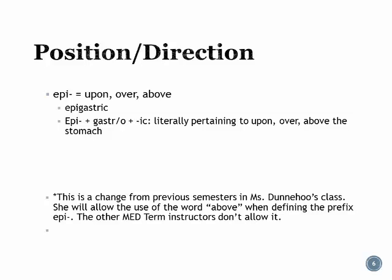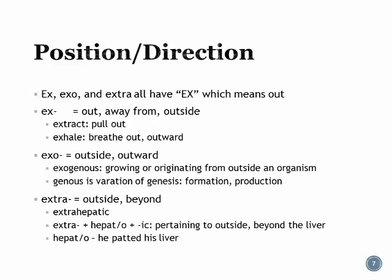Ex, exo, and extra all have the letter x, which means 'out,' so their definitions are some variation of 'out.' Extract — we pull something out. Exhale — we're breathing outward. Exo means outside or outward, as in exogenous. Exogenous means growing or originating from outside an organism, because genus is a variation of genesis, meaning formation or production.